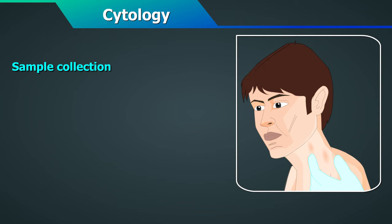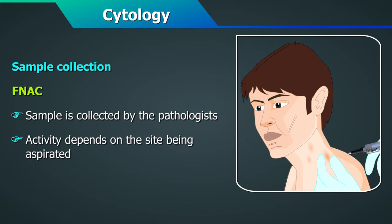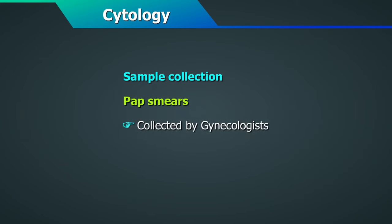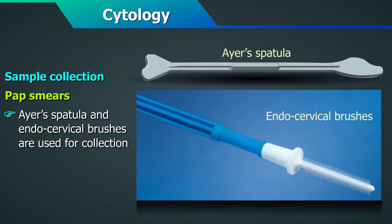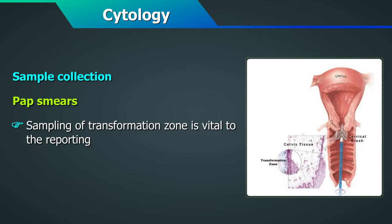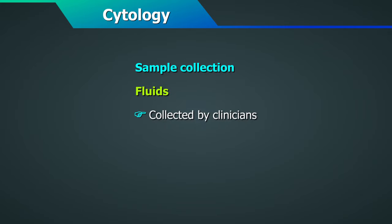Sample collection for FNAC is generally done by the pathologists, and the activity depends on the site being aspirated. Pap smears are mostly collected by gynecologists; Ayre's spatula and endocervical brushes are used for collection. Sampling of the transformation zone is vital to the reporting of PAP smears. Fluids are collected by clinicians and sent to the lab, and their processing is explained in the video on fluid analysis.